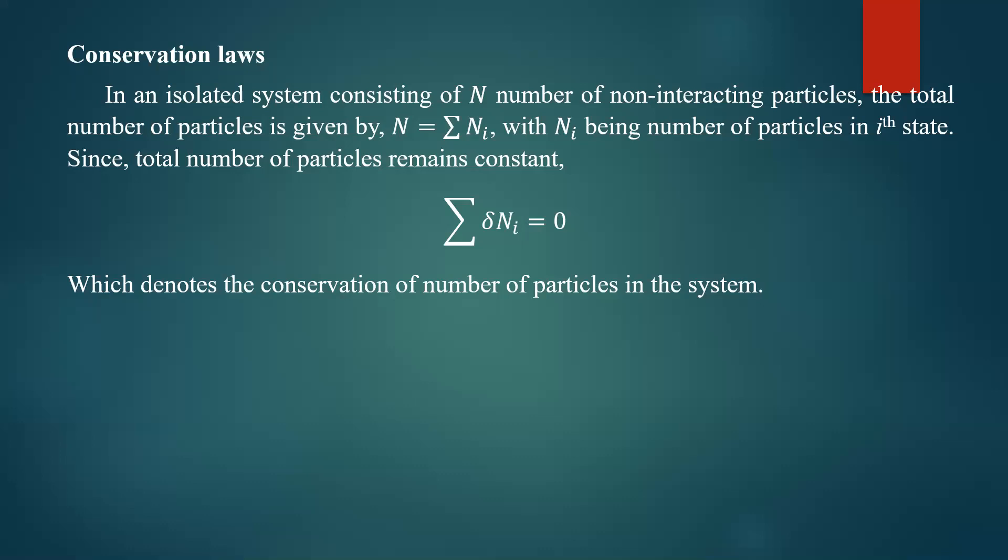There will be a large number of states — first state, second state, and so on up to some ith state. If you take ni as the number of particles in the ith state, it may be n1, n2, n3, and so on up to nN. In each state there will be a different number of particles. If you take the summation of all the particles in the different states, that gives you the total number of particles in the system, represented as capital N.